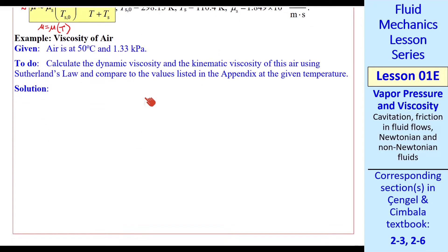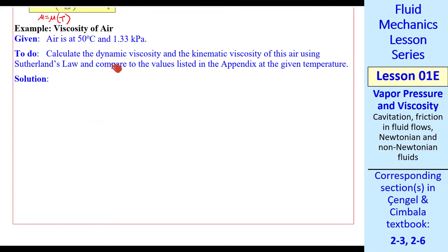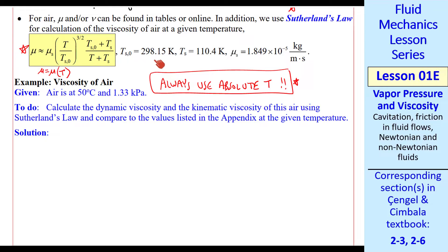Let's do a quick example. Let's calculate the viscosity of air at 50 degrees C and 1.33 kPa. First, a comment, always use absolute temperature when using Sutherland's Law. This is a good equation to put into Excel or other software for when we do problems that require the viscosity of air.